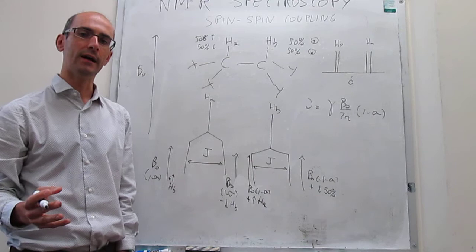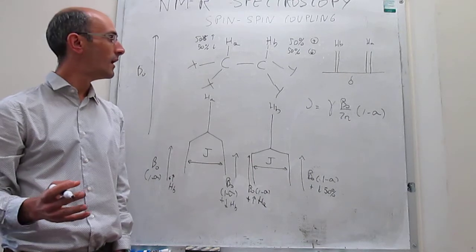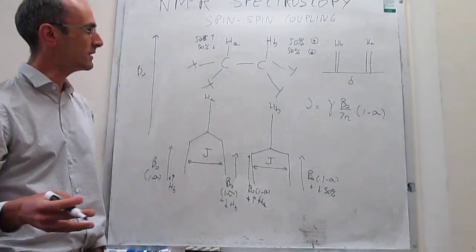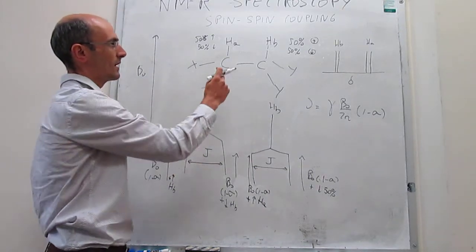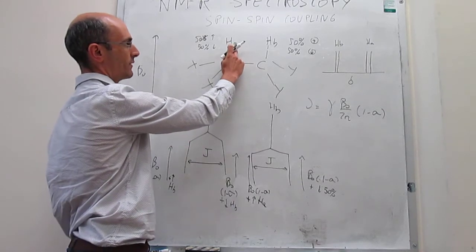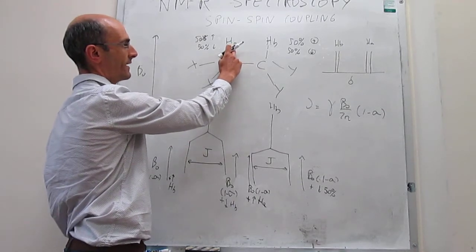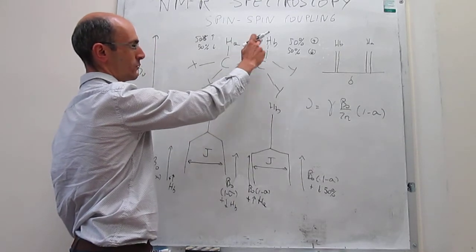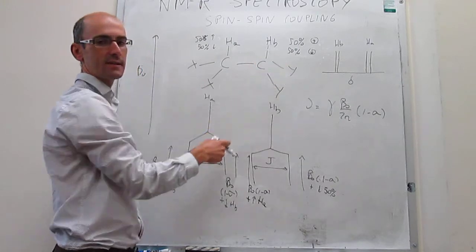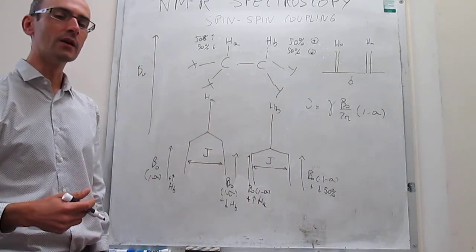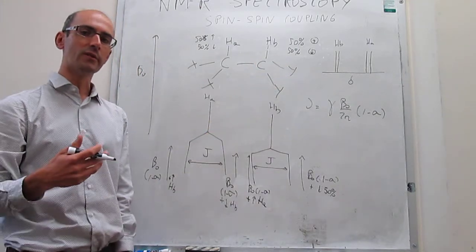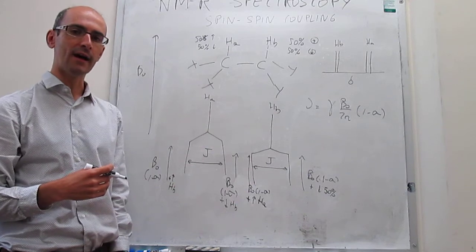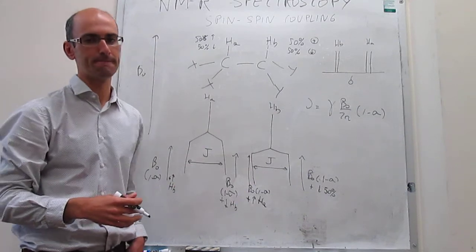In the next few videos, we're going to see what happens when you have the coupling of one HA to two HBs, one HA to three HBs, and so forth, learning the patterns for how this splitting happens in a general sense.